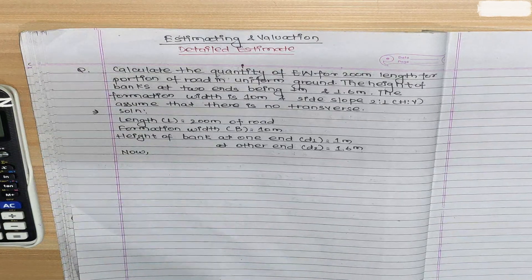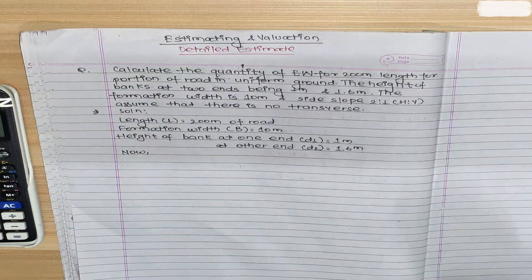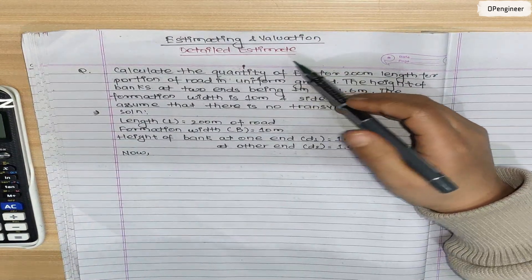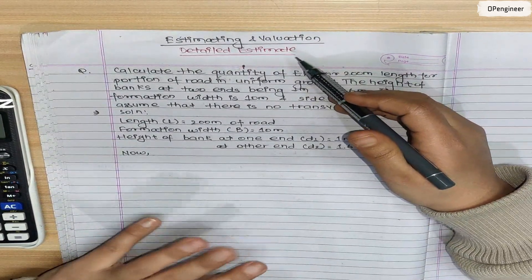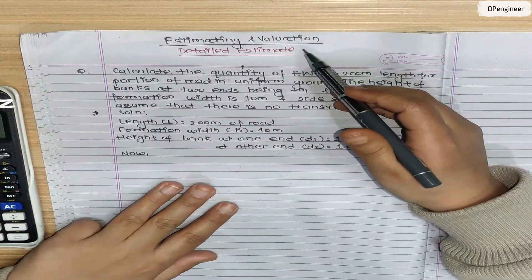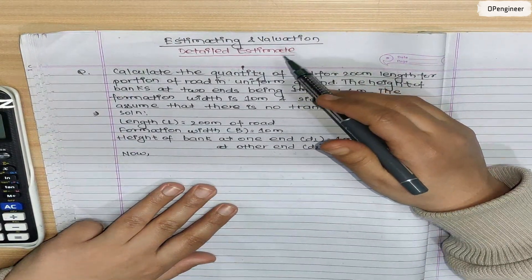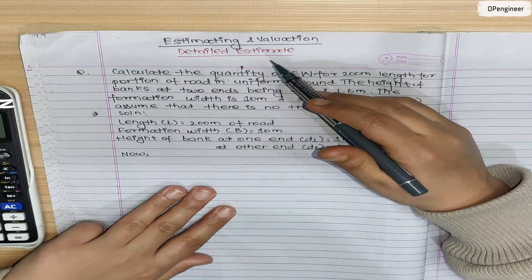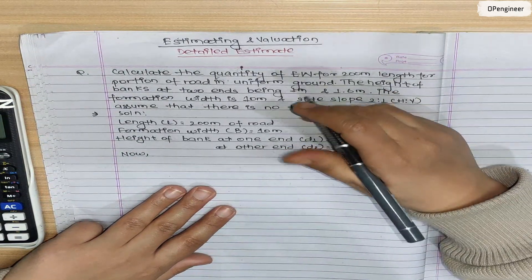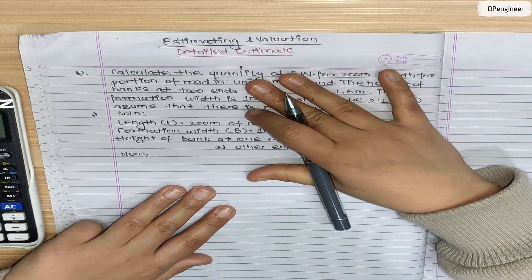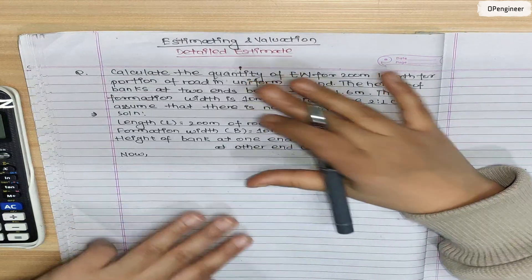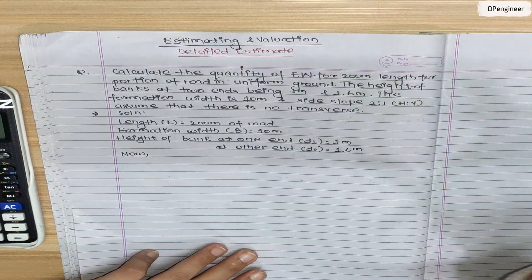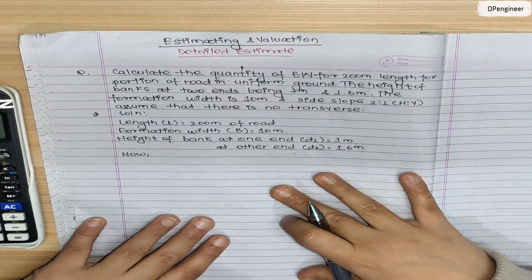I am estimating and valuation, and detail estimate numerical. Detail estimates are three types: one is the mid-sectional area method, second is the mean sectional area method, and third is the prismoidal formula method. We need to solve this numerical using these three methods.